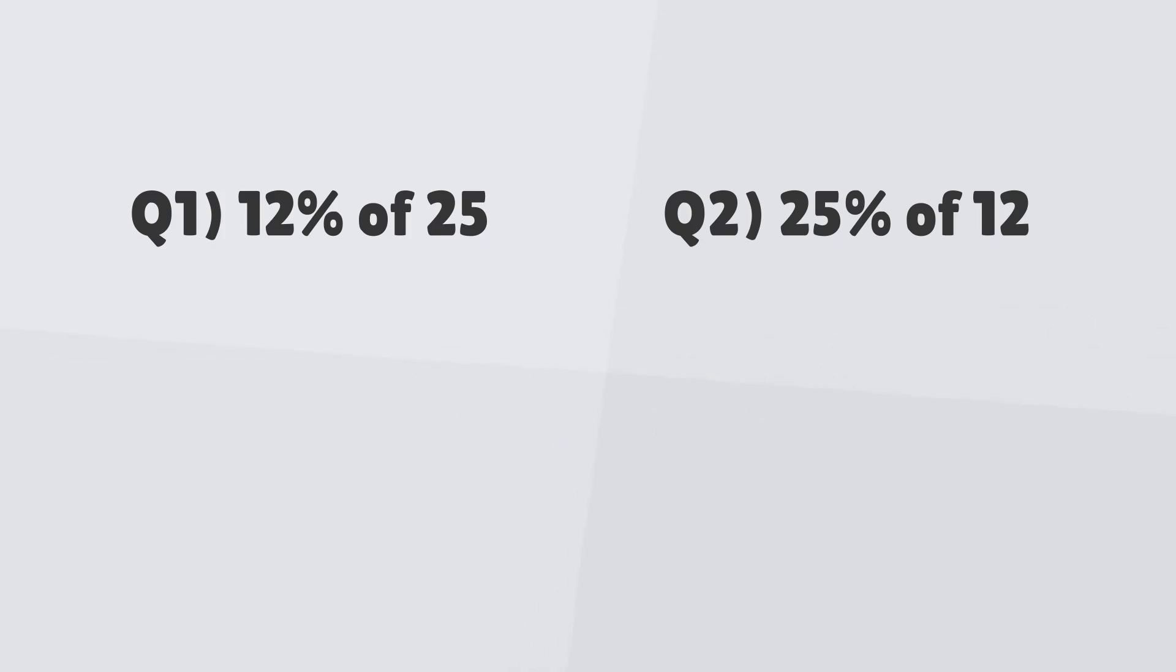Therefore, if asked to solve a problem like 12% of 25, first check whether it's easier to solve it the other way around. In this case, 25% of 12 is certainly the easier problem. We can find 25% or a quarter very quickly in our head, giving us an answer of three. If you were to take 12% of 25, you would in fact get the same answer.